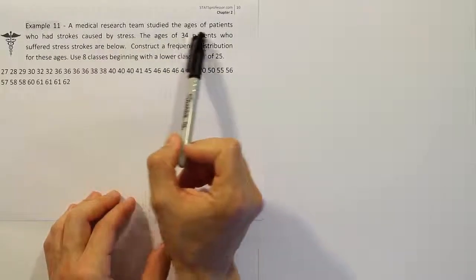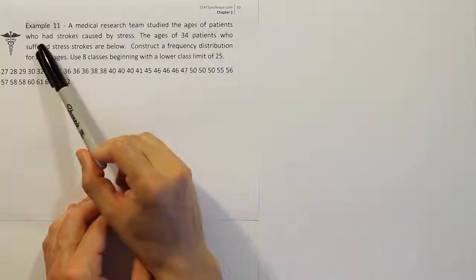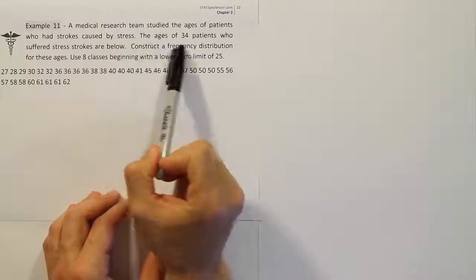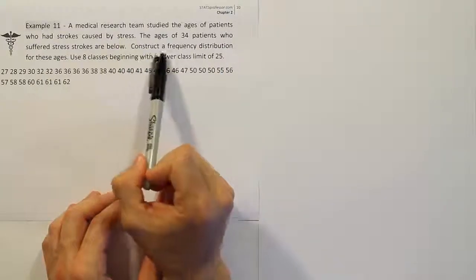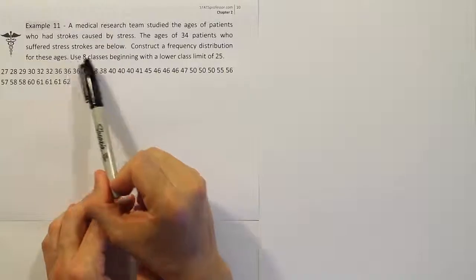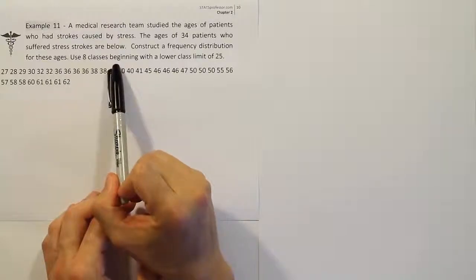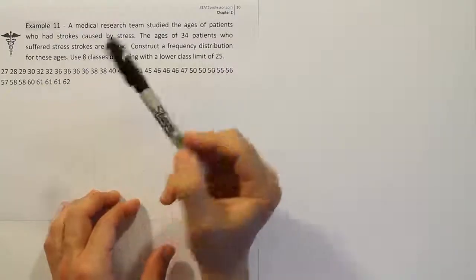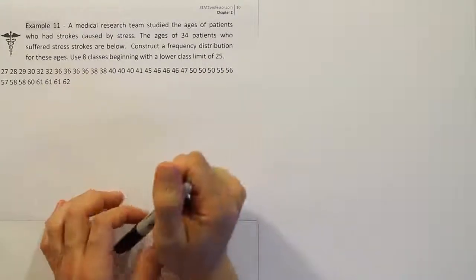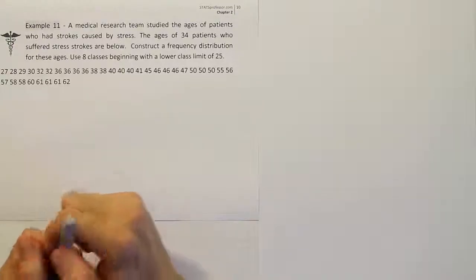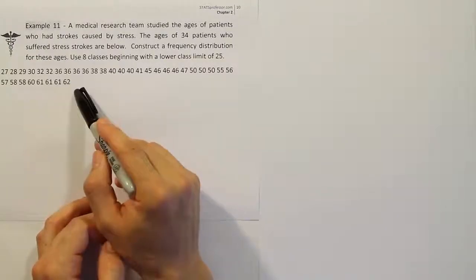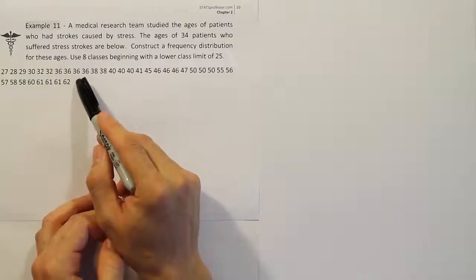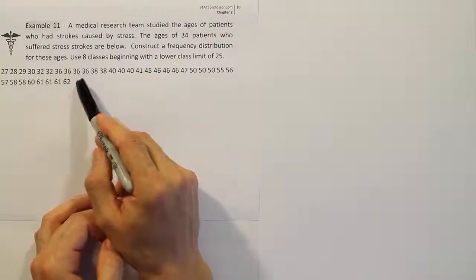A medical research team studied the ages of patients who had strokes caused by stress. The ages of 34 patients who suffered stress strokes are given. We need to construct a frequency distribution for these ages — essentially a table that organizes the ages so we can make sense of the data and see what patterns exist.